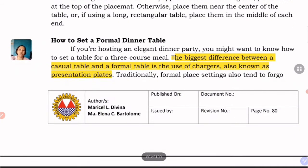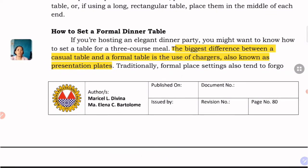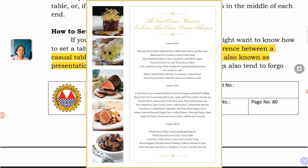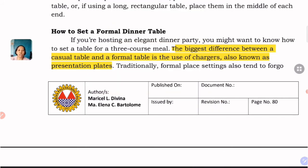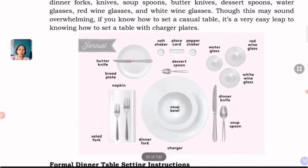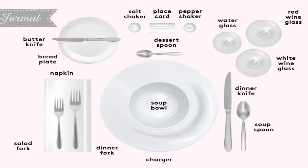Next is how to set up a formal dinner table. If you're hosting an elegant dinner party, you may want to know how to set up a table for a 3-course meal. The biggest difference between a casual and formal table is the use of chargers, also known as presentation plates. This is commonly seen at formal events like weddings and debuts. Looking at the illustration, we can see that more tablewares are needed for a formal dinner.